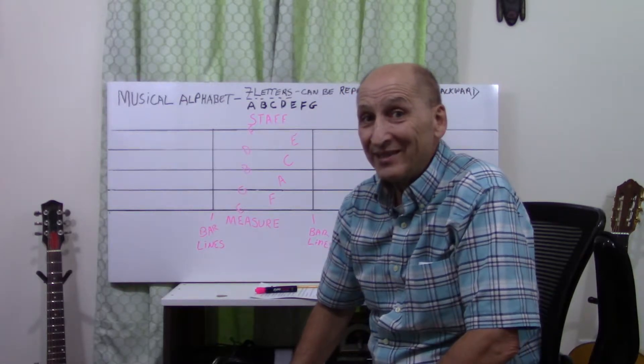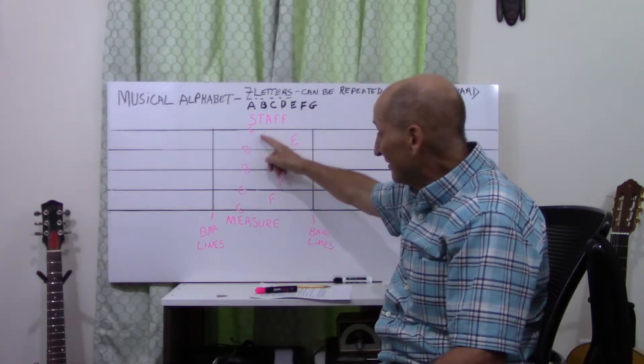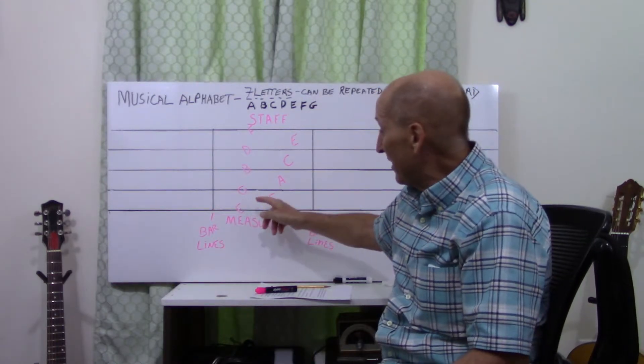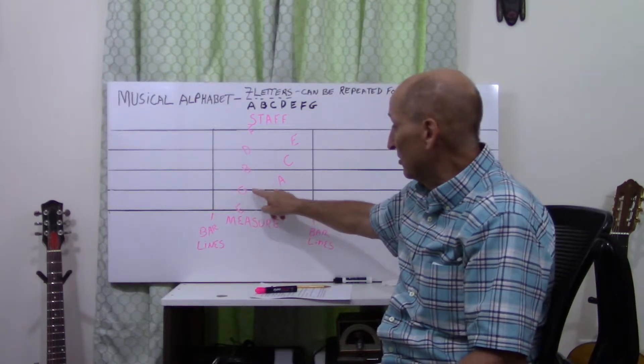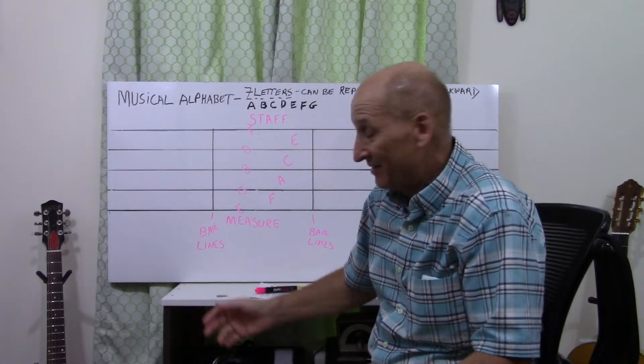Now, today we're going to be discussing how these letters, where does the name come from? What makes this line E, this line G, this line B, where does it come from?